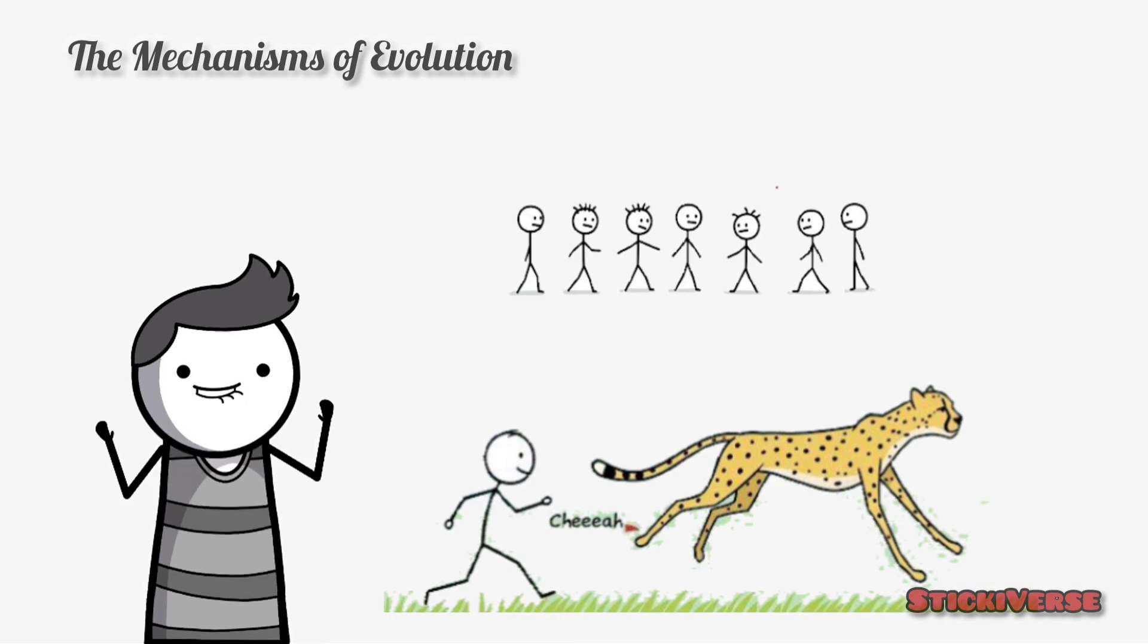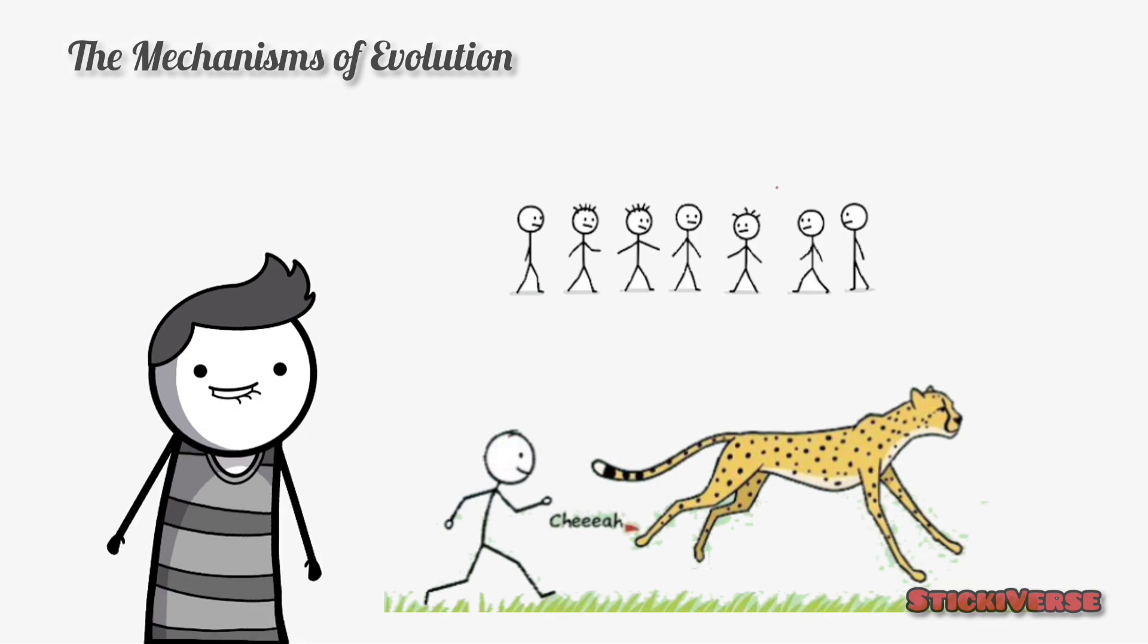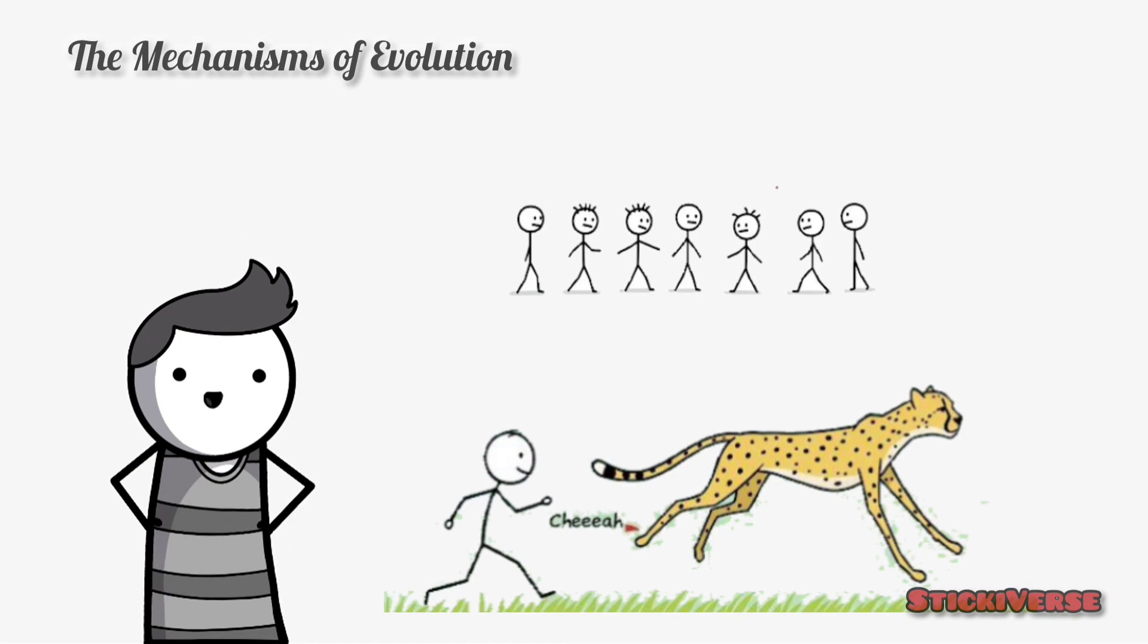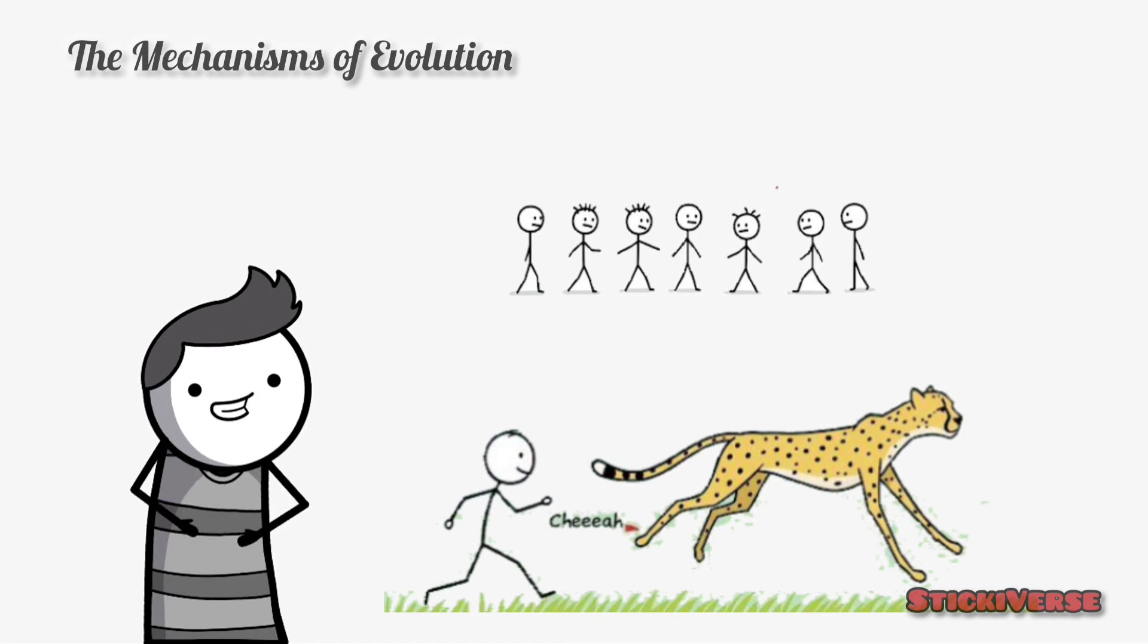Organisms with traits that help them survive and reproduce are more likely to pass those traits on to the next generation. Over time, these advantageous traits become more common in the population.